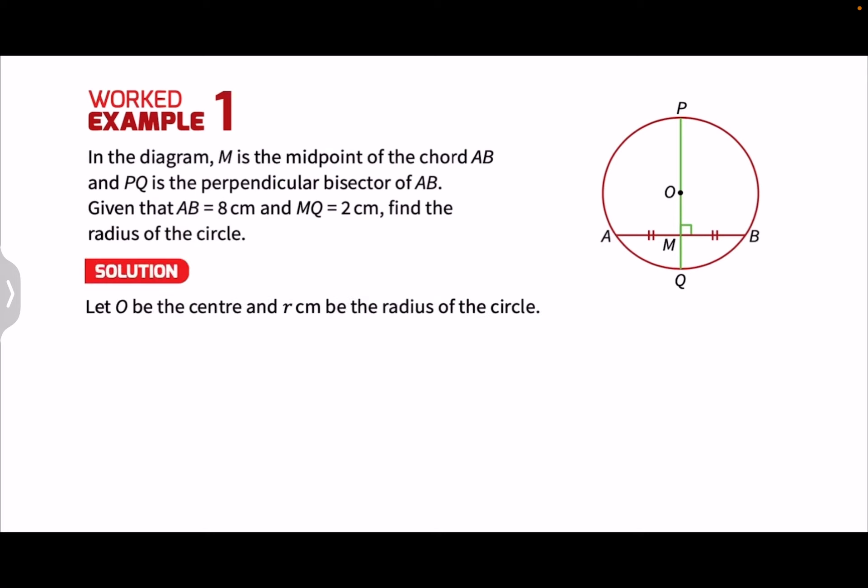So what we'll do first, we'll let O be the center and R be the radius of the circle. And the center O will lie on the line BQ, which will make BQ the diameter. This is because AB is the chord on the circle. And since BQ is a perpendicular bisector of AB, the center O will lie on BQ.